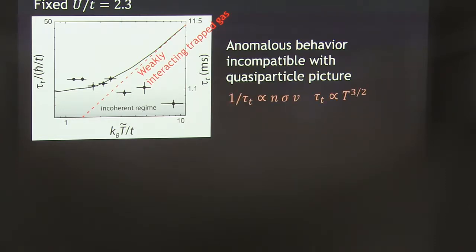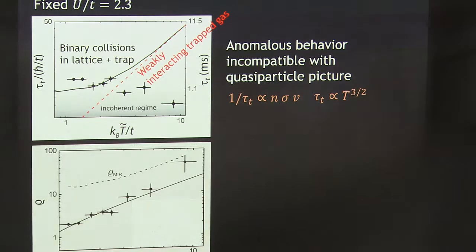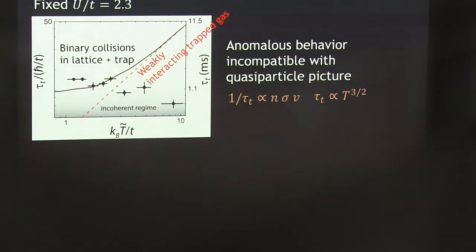A weakly interacting trapped gas — this is the kind of measurement Debbie and I did 20 years ago — would always have the decay time get longer and longer. That's very simple if you just think about it in terms of binary collisions. I did a slightly more sophisticated theory here — a quantum calculation using Fermi's Golden Rule, taking into account the trap and binary scattering model — and that's what this black line is here. It also predicts the same kind of behavior. So you really can't understand this in any simple way. There's not a good theory to compare this to.